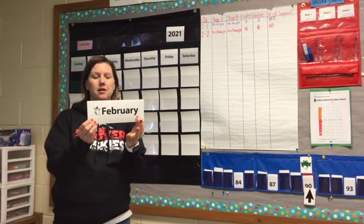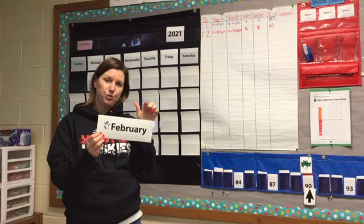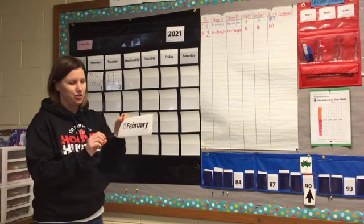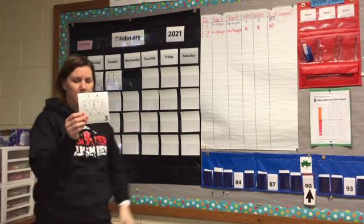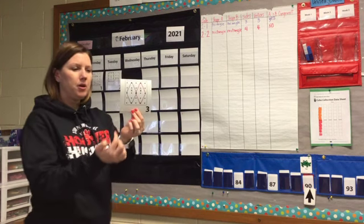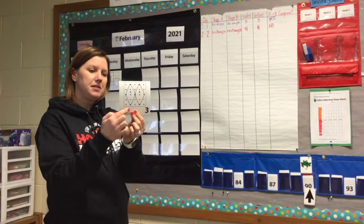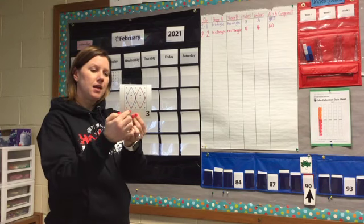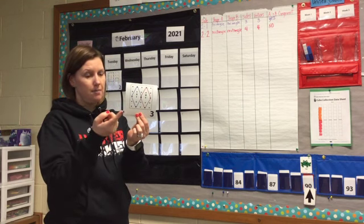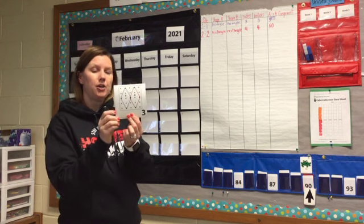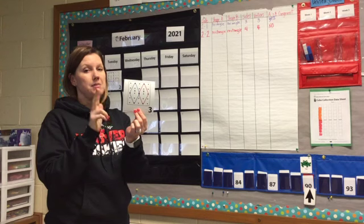Here is the month of February. Remember, February is the second month of the year, so that's why we write the number two when we write our digital date. So let's take a look at our calendar card from yesterday. Remember, we're comparing two shapes, shape A and shape B, and we want to study those shapes and decide what kind of shape it is, what's the name of it, and second of all, is it congruent? Remember, congruent means it's the same shape and it's the same size.